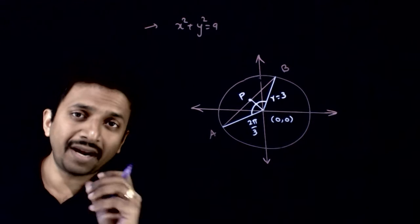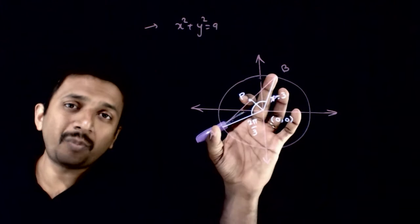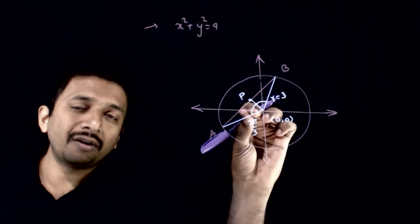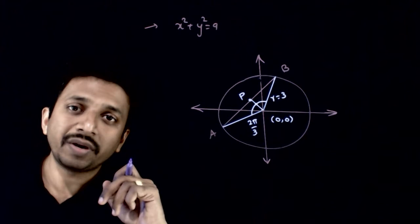Now, you are asked to find the locus of the midpoints of chords which subtend an angle of 2π by 3, that is 120 degrees at the center.